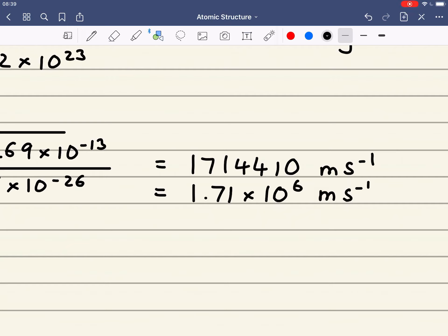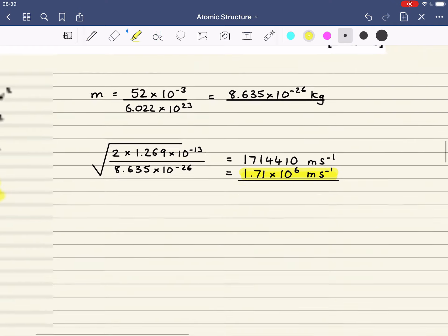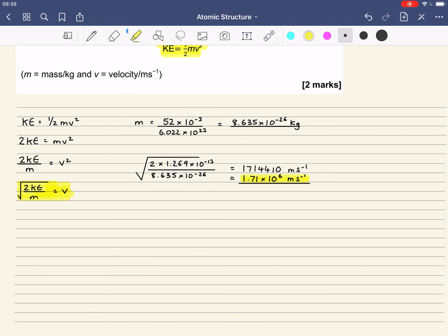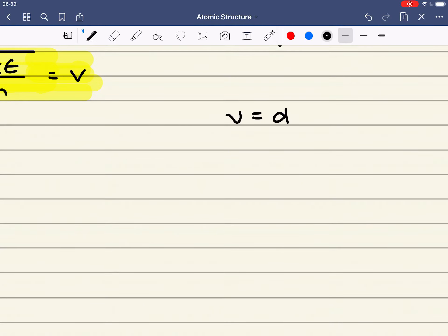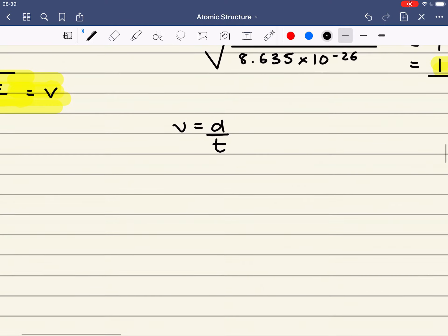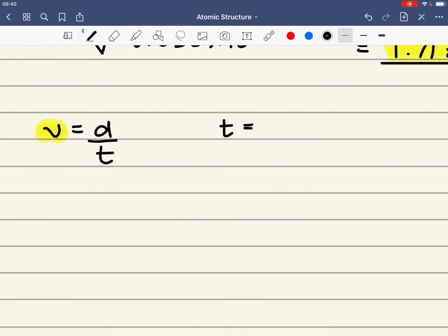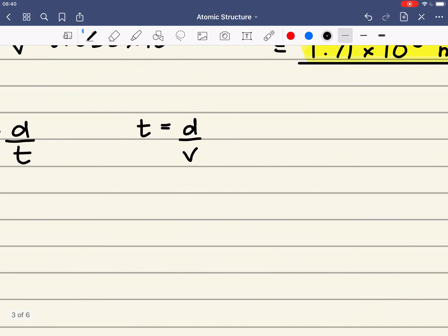And that's how you'd work out the velocity. Now it's important you can do this because you might be asked in a question to work out either a time or a distance. Now because velocity is distance over time, once you've worked out this velocity value, if the question gives you distance, then you can work out time. Time is distance over velocity.